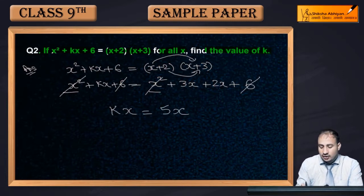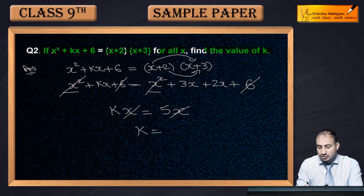So what will you get? kx = 3x + 2x, which will give 5x. And here if you cancel x with x, you get k = 5, which is the value you had to find out.